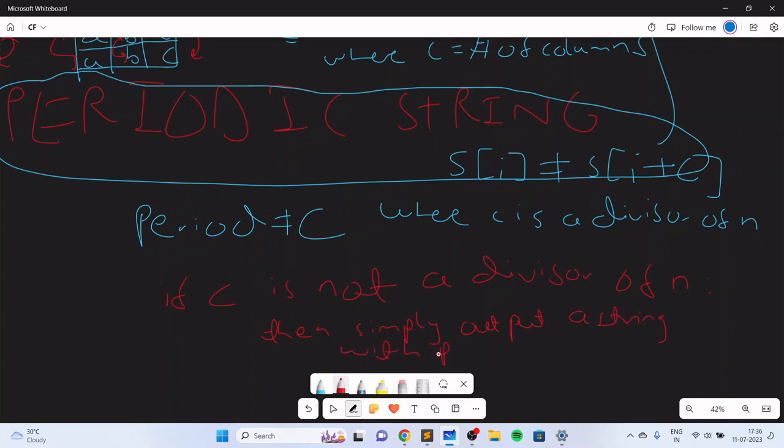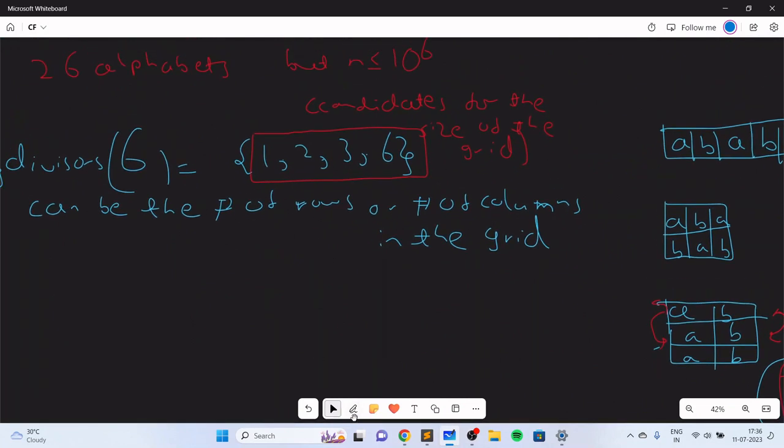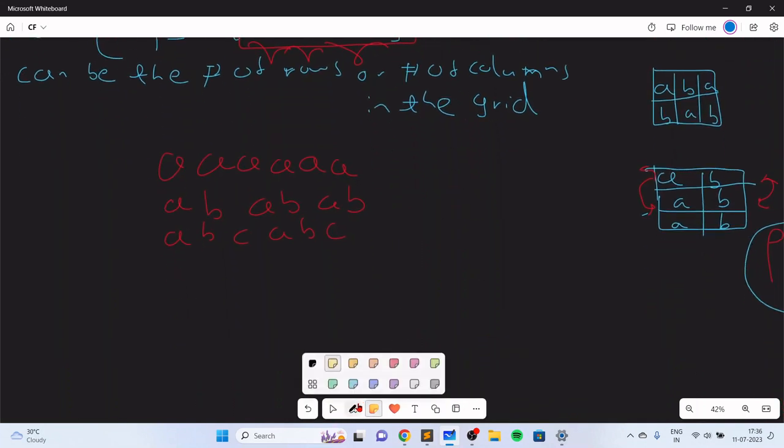If you consider the divisors of 6, you have 1, 2, 3, and 6. You can't have aaa because it will violate 1, you can't have ab ab ab ab because it will violate 2, you can't have abc abc because it will violate 3, but you can have abcd and you most definitely can have this because it does not violate a divisibility condition.